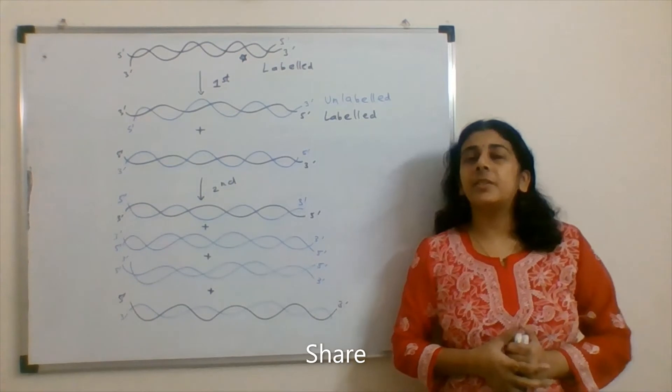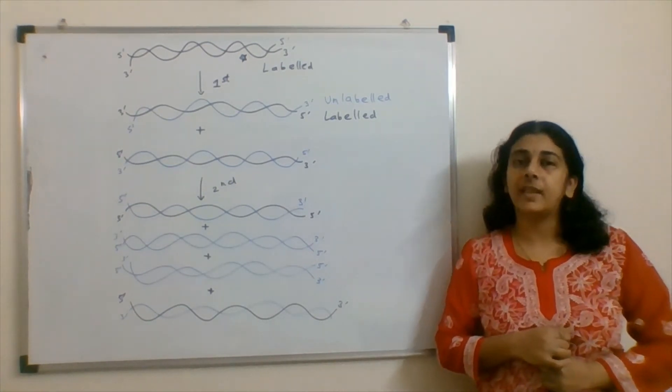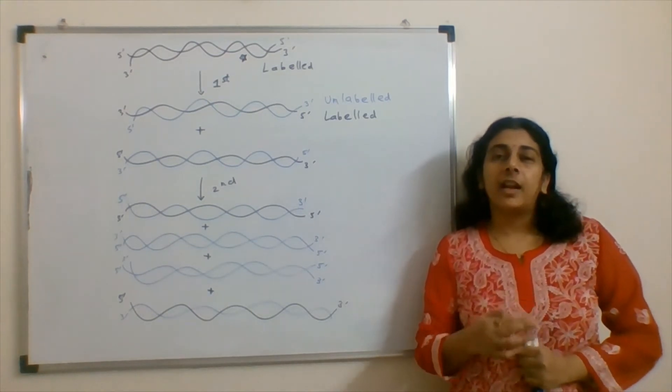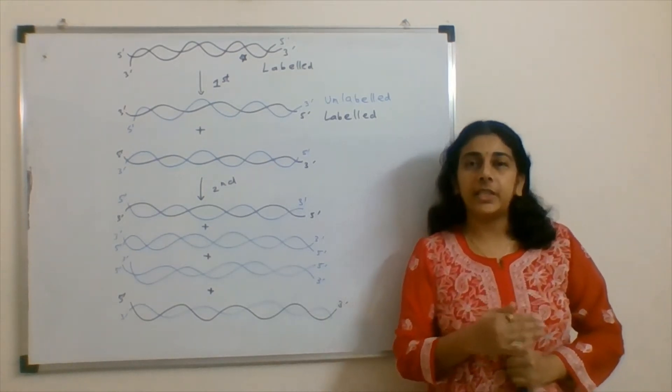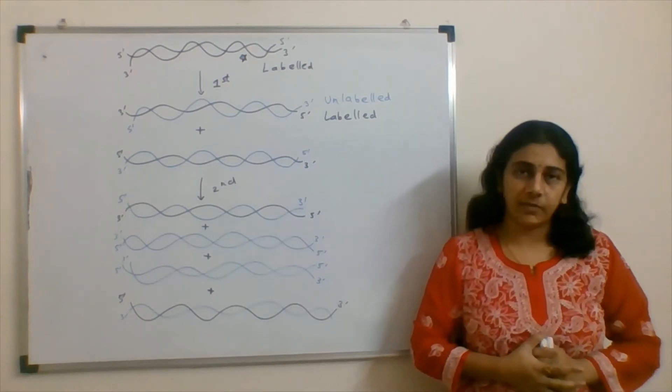The basic principle for this question is the DNA replication is a semi-conservative replication. Means what? At every replication cycle, the initial strand is conserved and one new strand is formed.